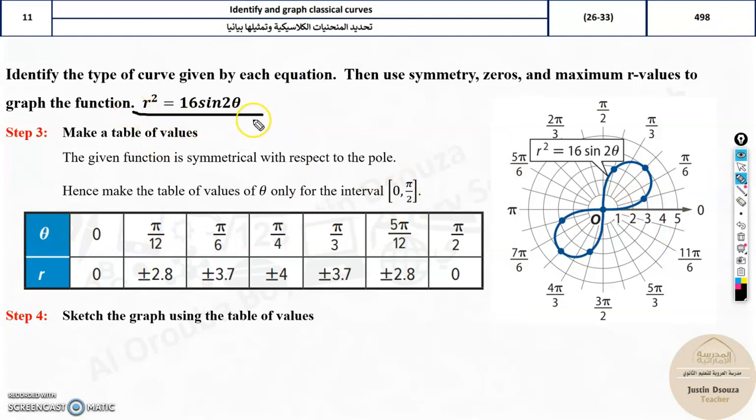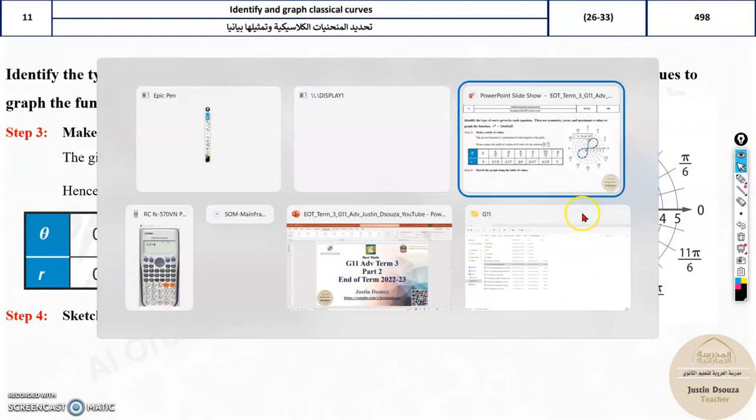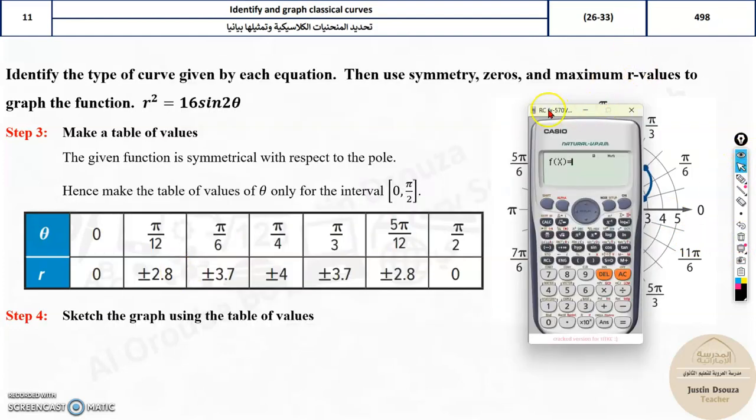Standard form will be in terms of r squared equals 4 squared sine 2 theta. You know, this is lemniscate. Since it's sine theta, it will be along the xy line. Now, this 4 means the radius, see, it's 4 squared, right? From here to here, it will be 4. And then, it's sine theta, so obviously the maximum distance would be 4. That's it. So you can easily find it. Otherwise, there's one more method. Take out your calculator.